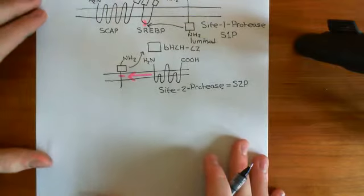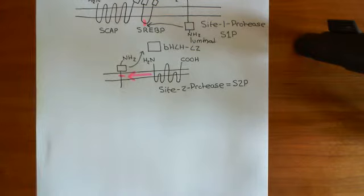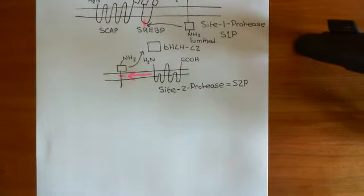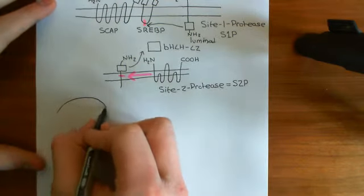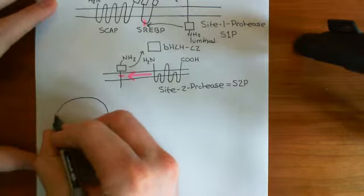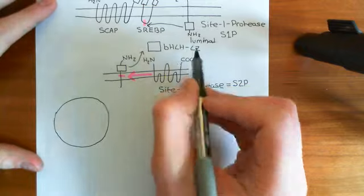In the nucleus, this transcription factor increases the expression of the LDL receptor, to increase absorption of LDL from outside the cell and deliver more cholesterol to the cytoplasm. It also increases expression of HMG-CoA reductase to increase de novo synthesis of cholesterol. Let's now discuss what transcription factors do at DNA and what is meant by a BHLH leucine zipper transcription factor.